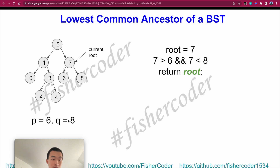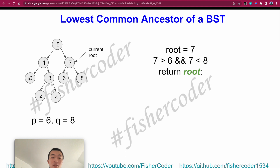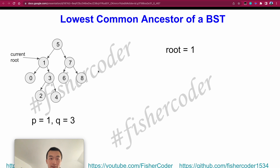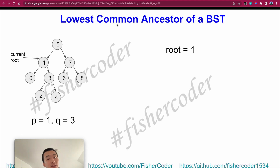Those are the three main cases. There's also a base case: whenever we encounter a null node, such as when we try to recurse to the left or right of a leaf node, we just return root and let the recursion continue. Another base case is when the current root node equals p or q — since a node is a descendant of itself, we directly return root.